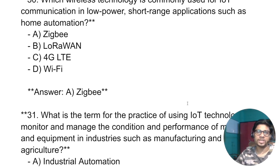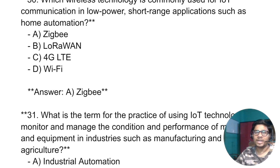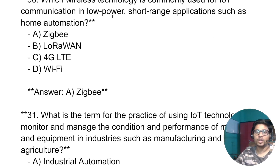Which wireless technology is commonly used for IoT communication in low-power, short-range applications such as home automation? The answer is: Zigbee.